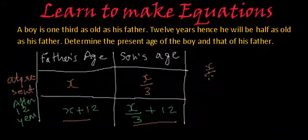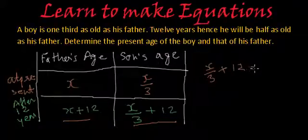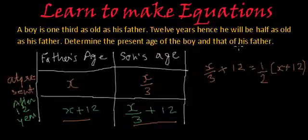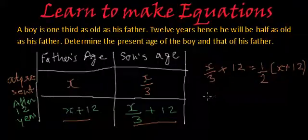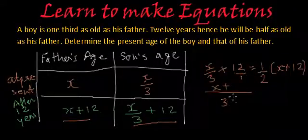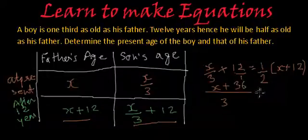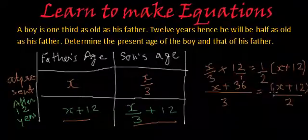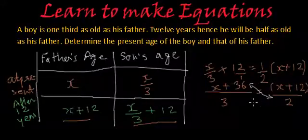They are saying 12 years hence, he will be half as old as his father. So son's age after 12 years, which is x/3 + 12, will be 1/2 of father's age after 12 years. Now let's solve it. Taking LCM on the left-hand side, LCM will be 3; x doesn't have any denominator so we write 1 as its denominator, giving us (x + 36)/3, which equals (x + 12)/2.